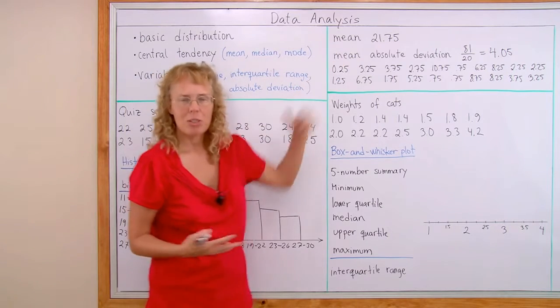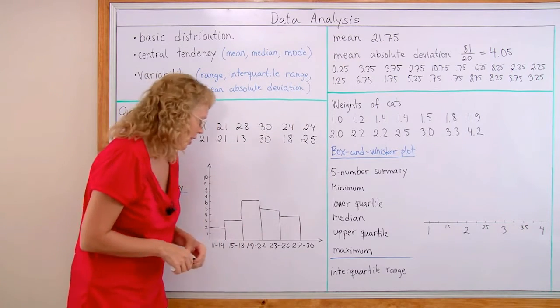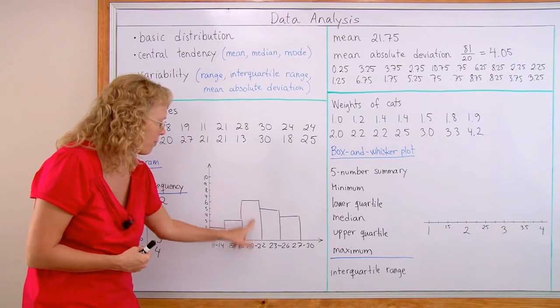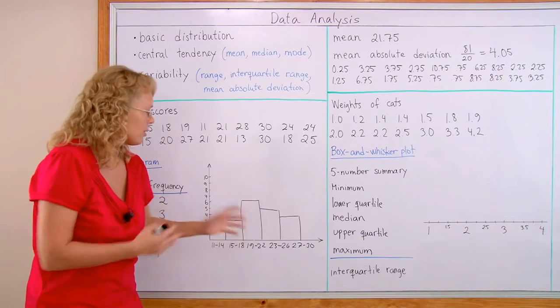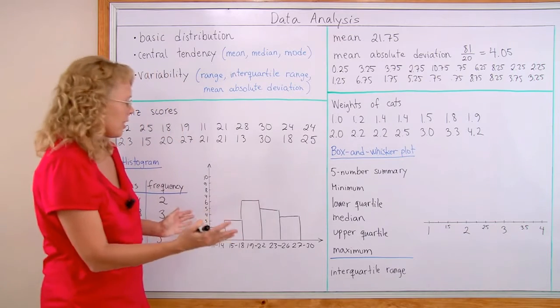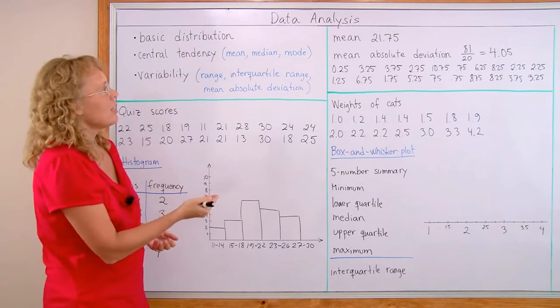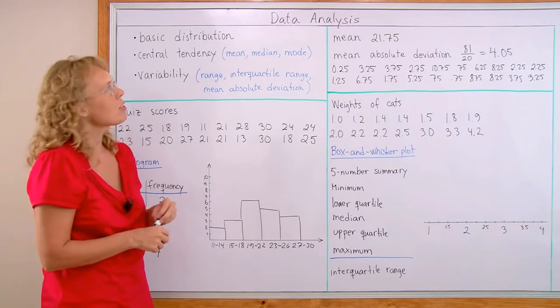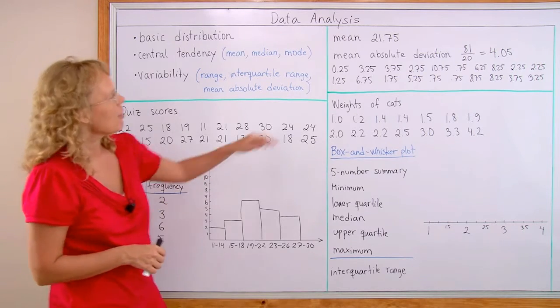And we can see that there is a central tendency, there is like a peak here in the middle and to speed us up here in the video I already calculated the mean, it is 21.75 which is in this particular bin, 19 to 22 bin somewhere here. So that's the peak of the data, that's the central tendency and also called the average. The average in this quiz, 21.75 points or about 22 points.